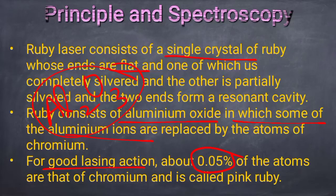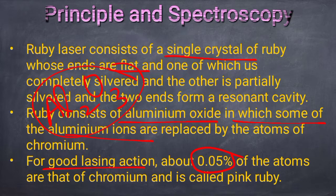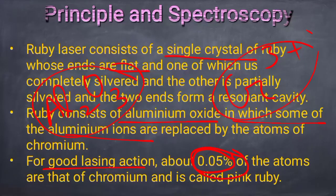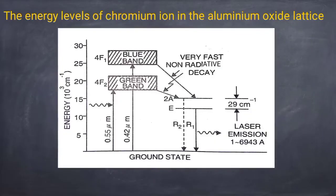About 0.05% of the atoms in the ruby crystal are chromium (Cr³⁺ ions), so that good lasing action is possible. This composition is referred to as pink ruby.